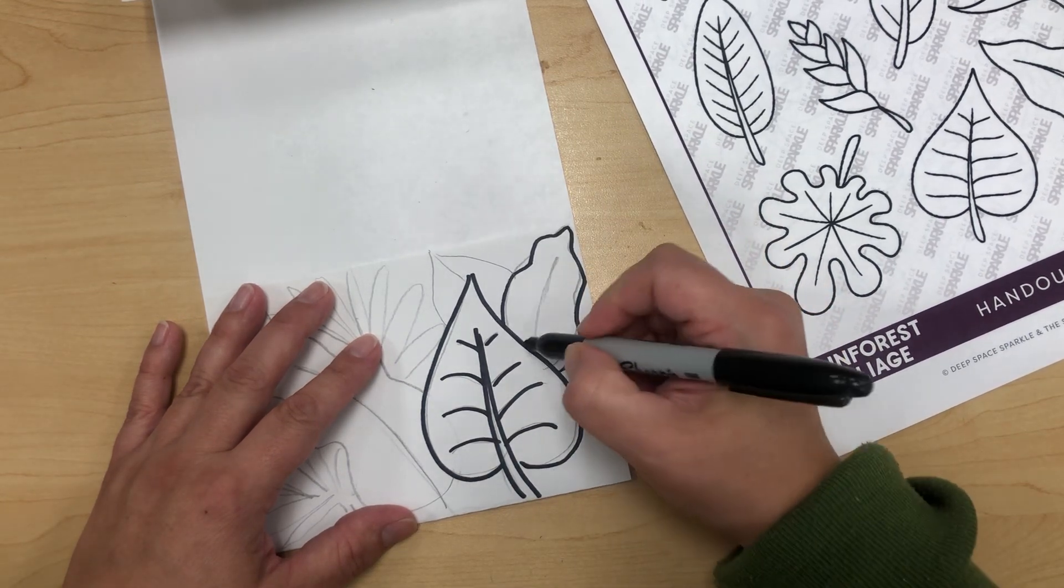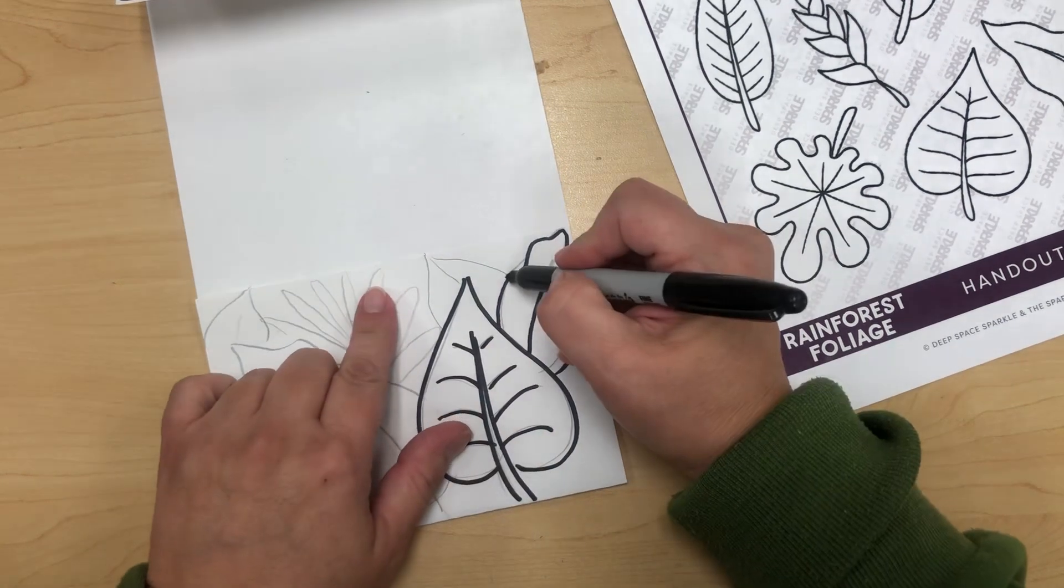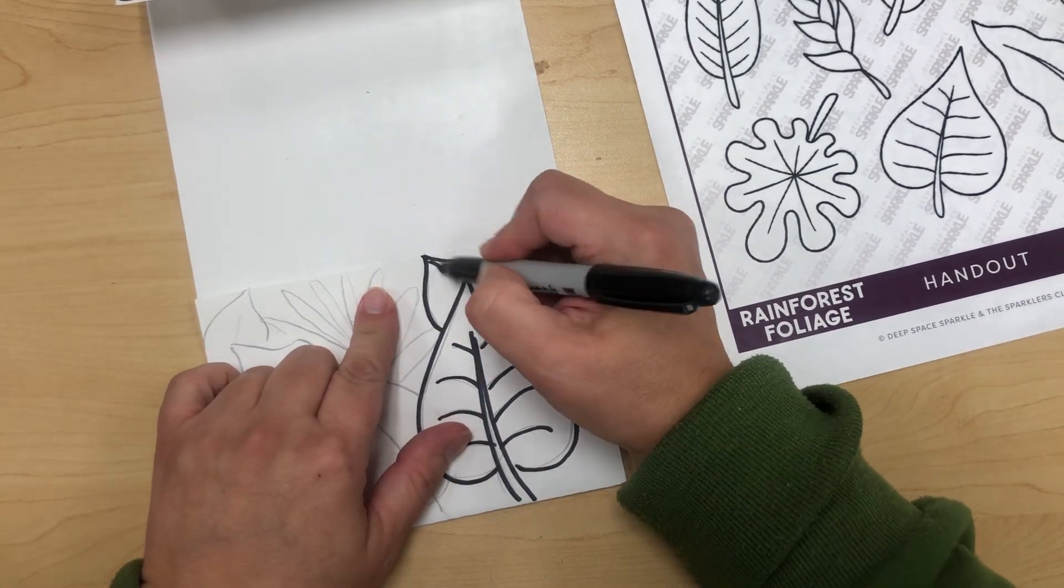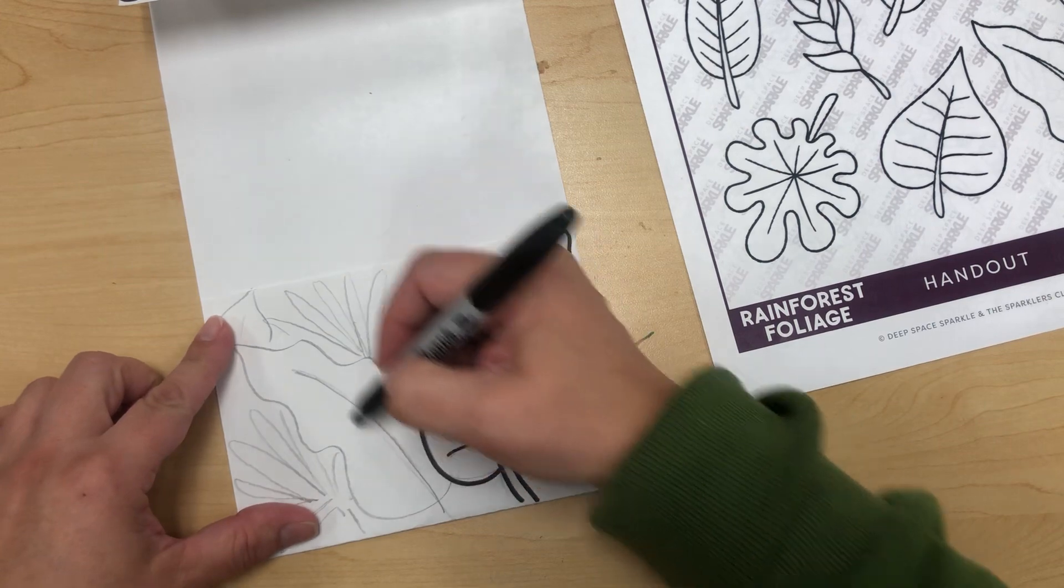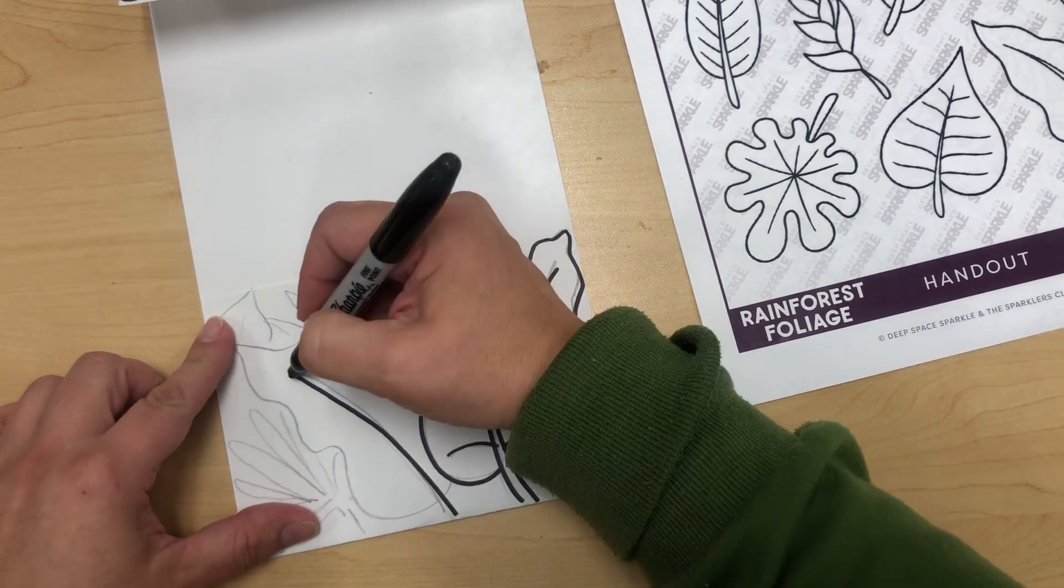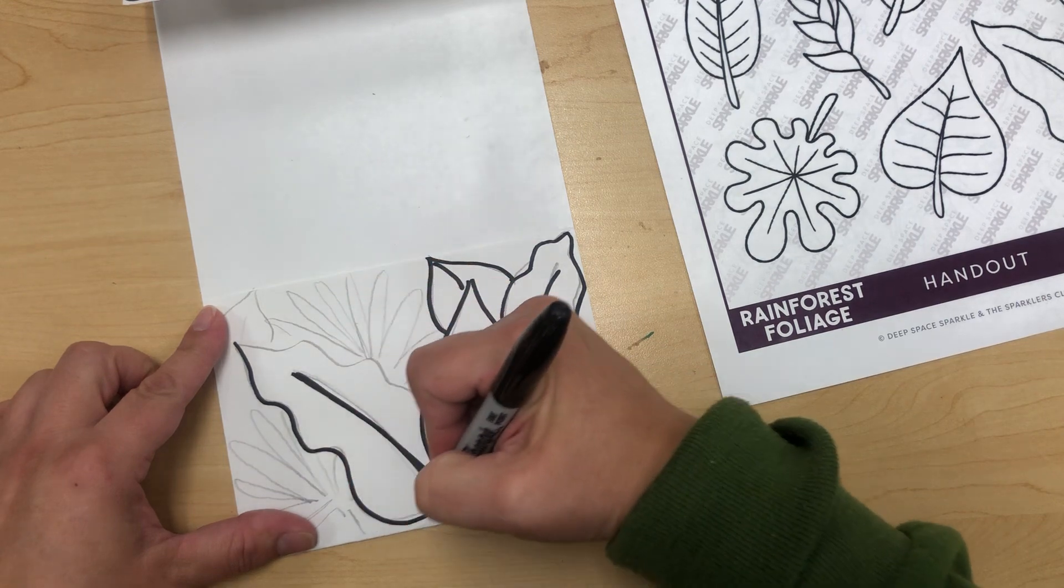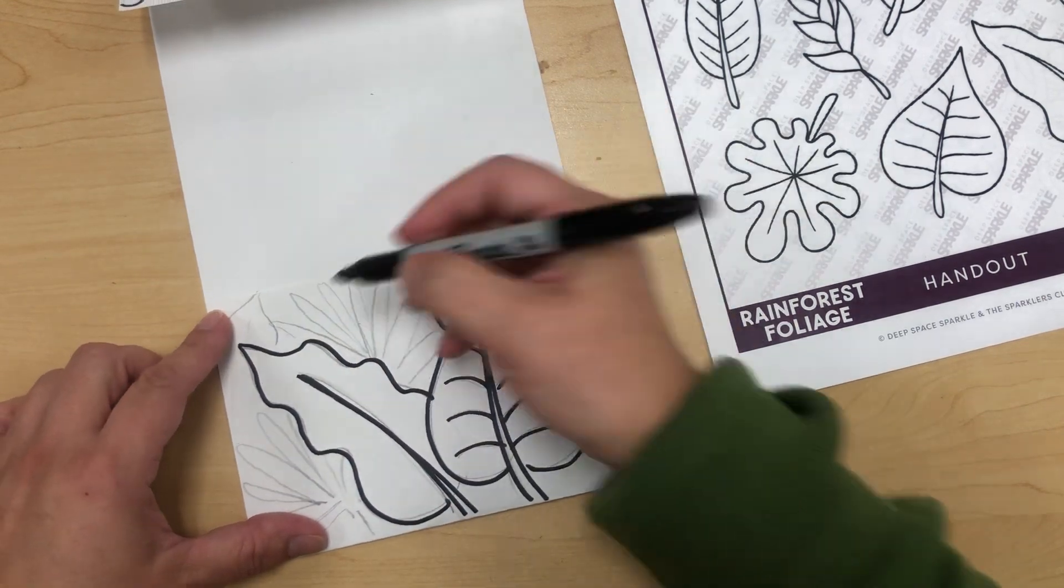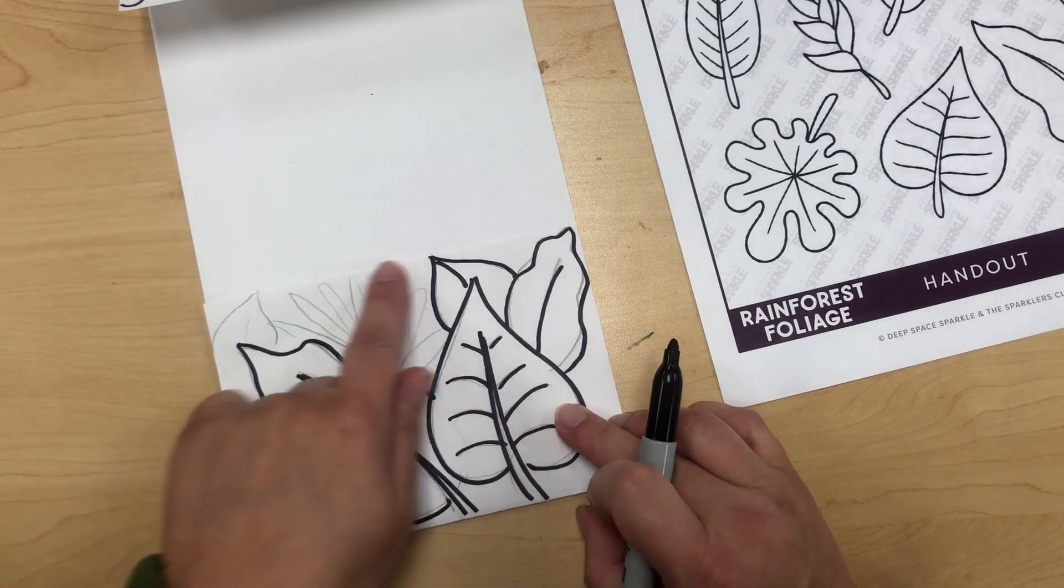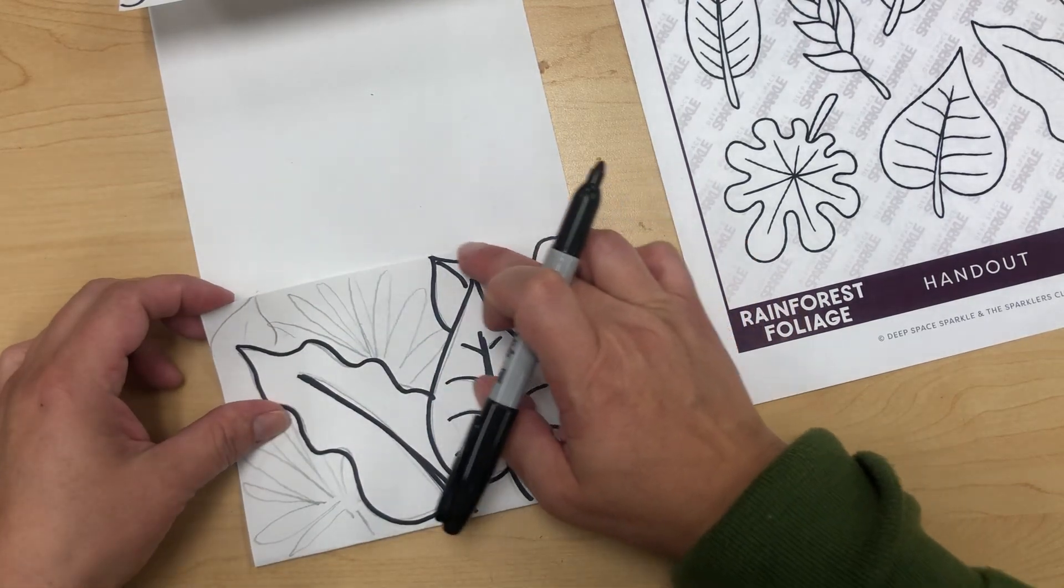The main thing today is this top part here. You want it to look interesting. You don't want to leave it flat because if it's flat, it's going to look not as interesting when we do the background and we keep layering it. So you want to have this right here, and then you're going to cut along that top layer here.